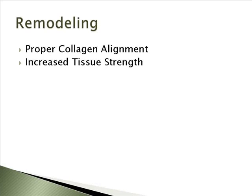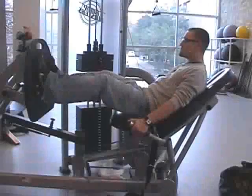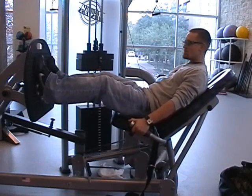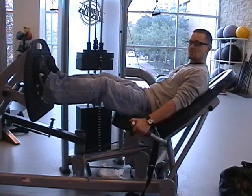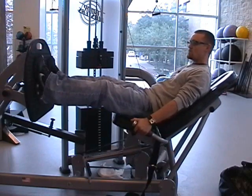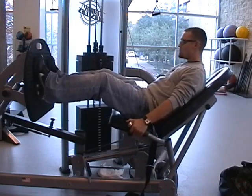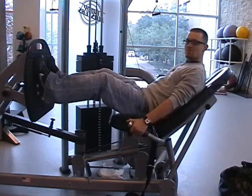The third and final phase of rehabilitation is the remodeling phase. During this phase you will see proper collagen alignment and increased tissue strength. You can start adding weight to exercises as you are strengthening the tissue. Examples are leg press and squats with low weight. During the remodeling phase, the leg press is a very effective exercise to use, but remember never pass 30 degrees of knee flexion while performing the leg press.